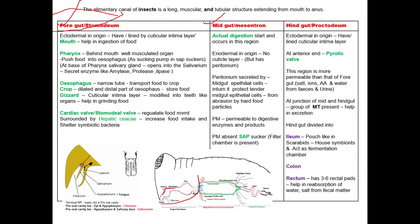The foregut is made of mouth, pharynx, esophagus, crop, gizzard, and cardiac valve.